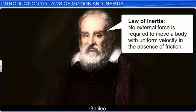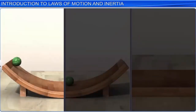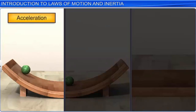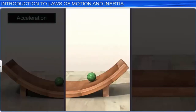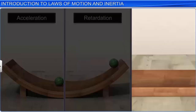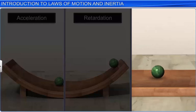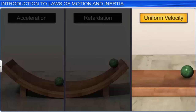Galileo conducted two simple experiments before postulating the law of inertia. The first experiment was with one inclined plane. A roller rolling down an inclined plane on its own accelerates. A roller rolling up an inclined plane on its own retards. A roller rolling on a horizontal plane neither accelerates nor retards, which means the roller should move with constant velocity when there is no friction between the roller and the horizontal plane.